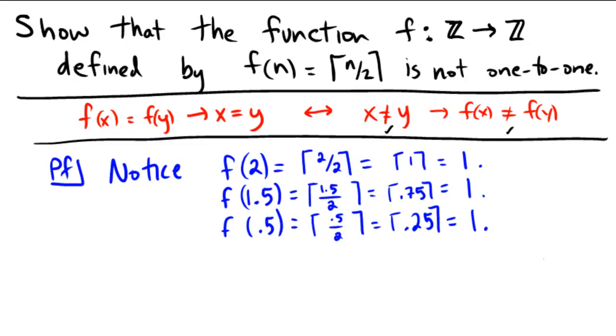Notice that we're finding more than one value. We found 2, 1.5, and 0.5, and there's many others which are different from each other, so satisfying the antecedent. Yet the outputs of the function every single time are 1. So the outputs of the function are equal to each other, even though the inputs were different from each other. So this function is not one-to-one.